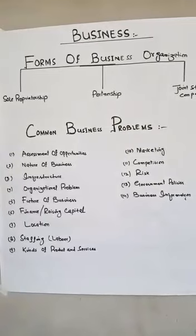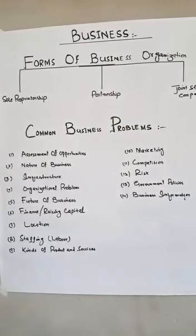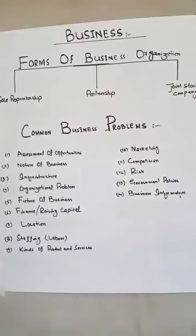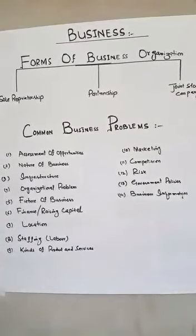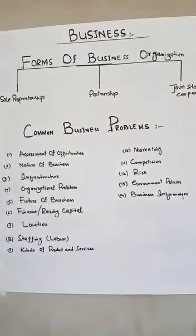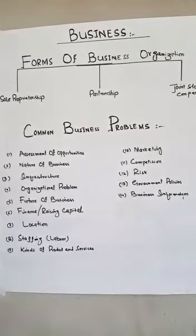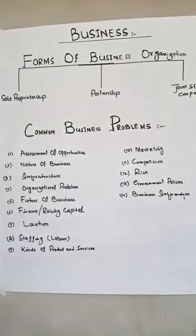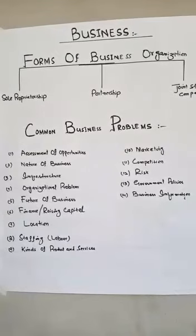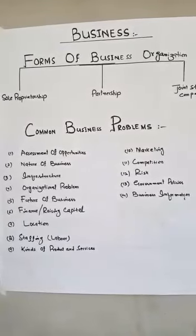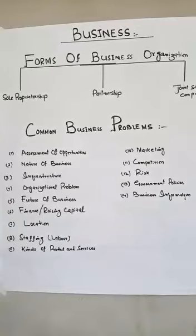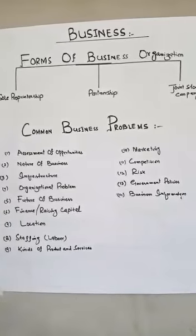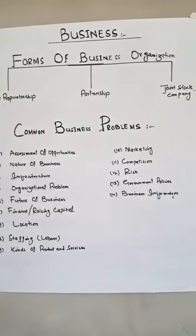Number ten is marketing. Marketing is a complete process which starts from the point of production and ends at the point of consumption. Marketing facilitates the businessman to move goods from the point of production to the point of consumption. It includes buying, selling, transporting, and warehousing.